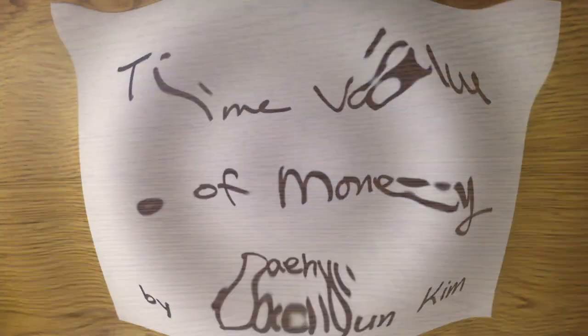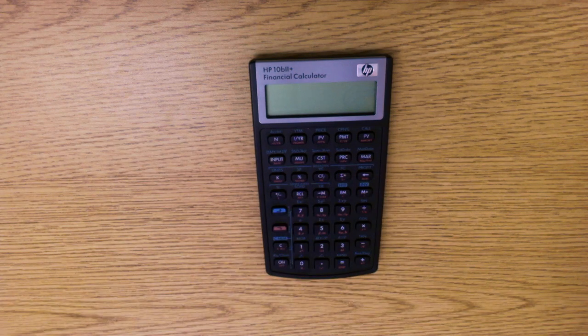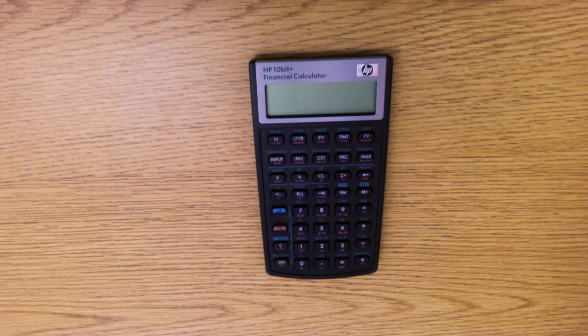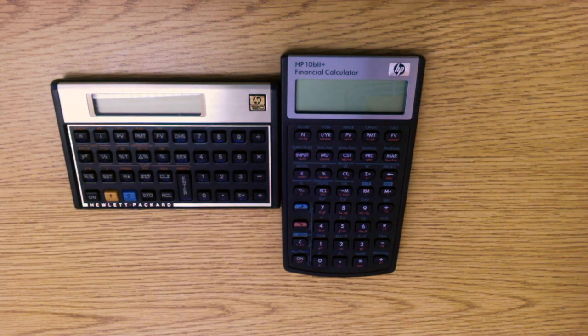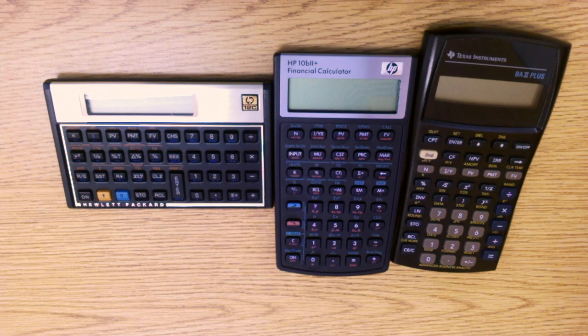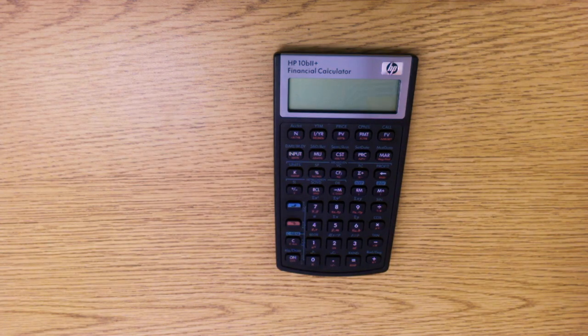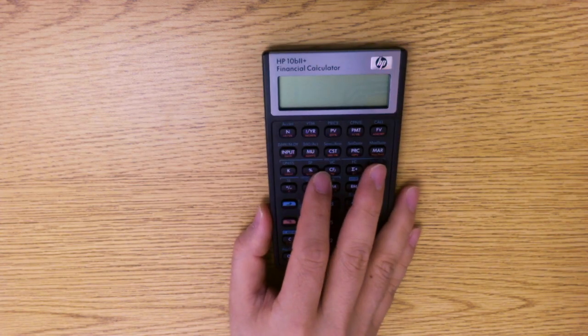All right, so let's begin. For this tutorial you will need a financial calculator. This is HP 10B2 plus, the one required on your syllabus. Alternatively you can use HP 12C or a TI BA 2 plus. They all work the same, it's just a matter of pressing different buttons at different times, but they basically do the same thing. You just need to find the right manual if you have any other types of financial calculators.